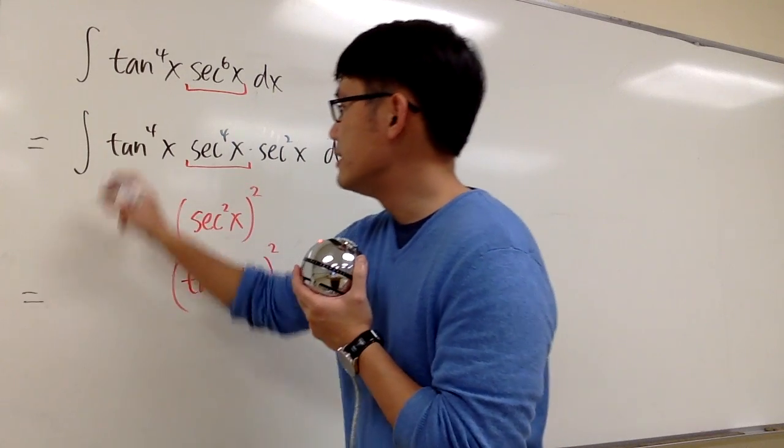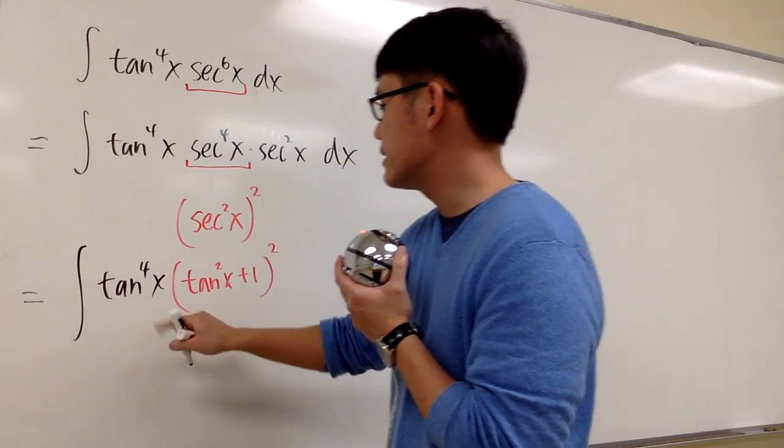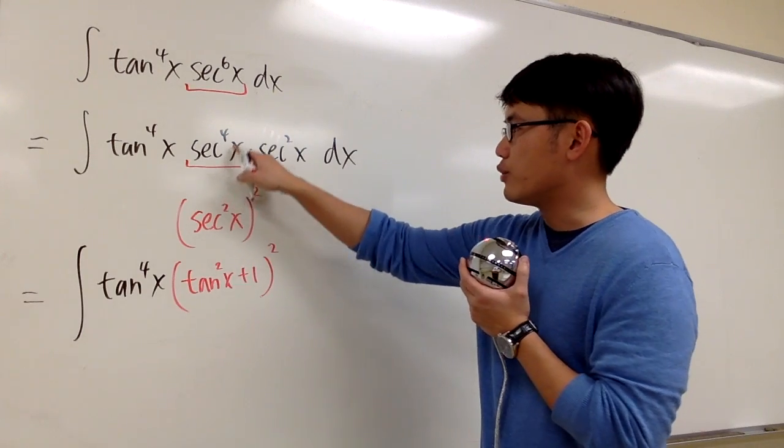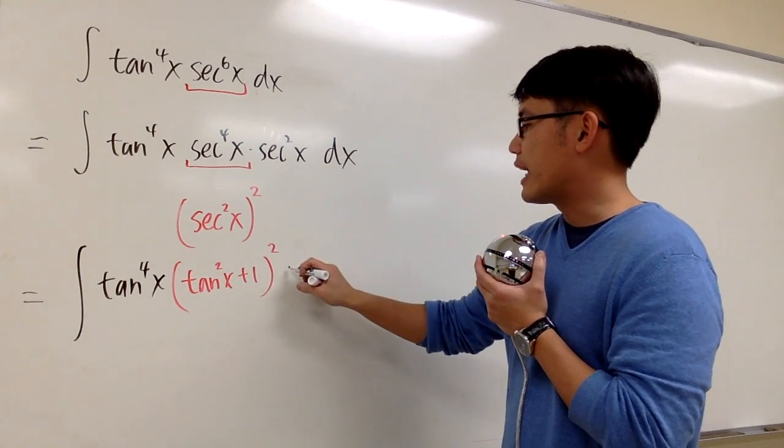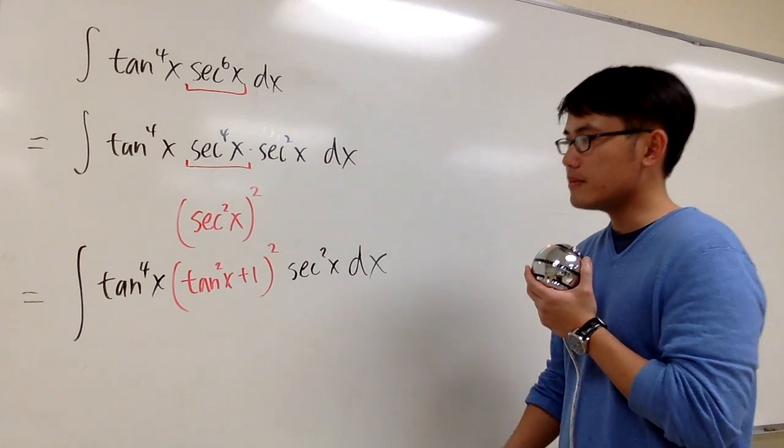And now let's look at this. This is going to be the integral of tangent to the fourth power x times this from secant to the fourth power, and then times secant squared x dx.